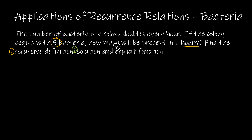Let's start with understanding the question. I start with five, and then it doubles. So at the end of the first hour I have 10, the end of the next hour I have 20, then 40, 80, and so on. If I want to find the recursive definition — that rule that says how do I get from one value to the next — obviously the colony doubles every hour. So I took the previous value times two to get to the next: five times two is 10, 10 times two is 20, 20 times two is 40, and so on.